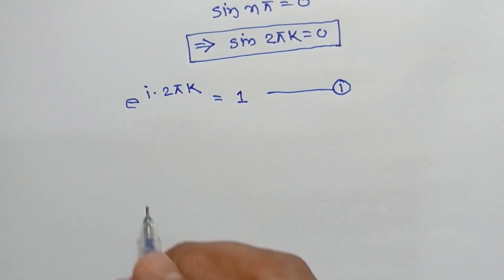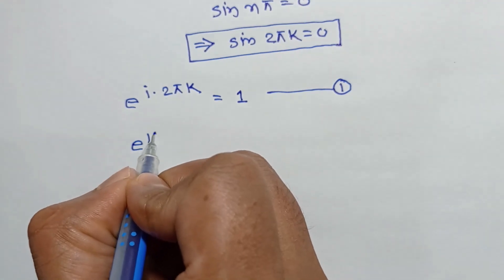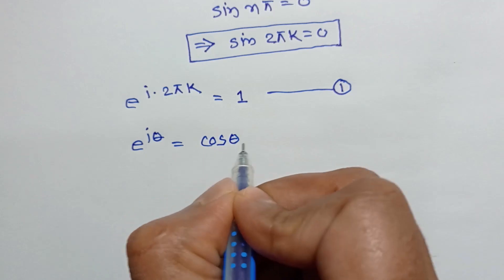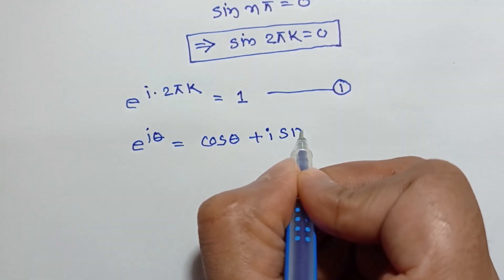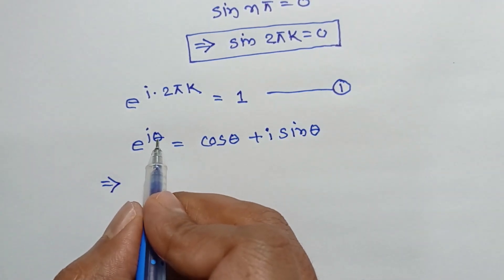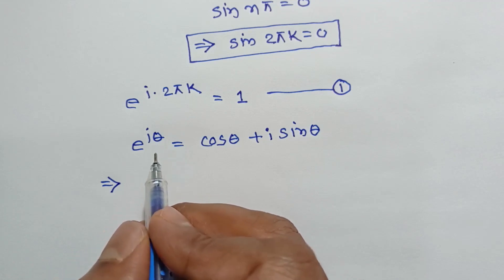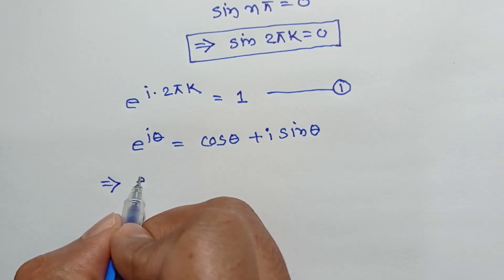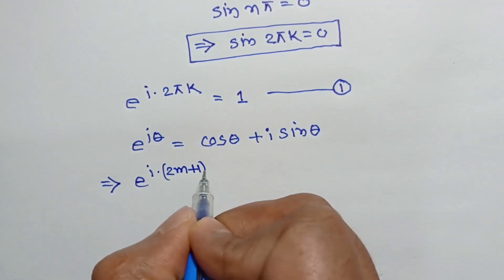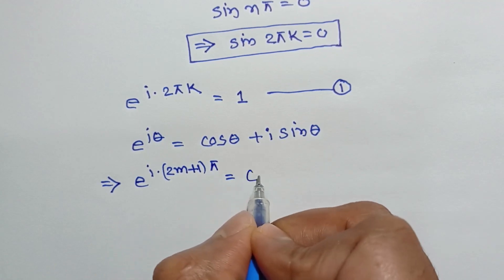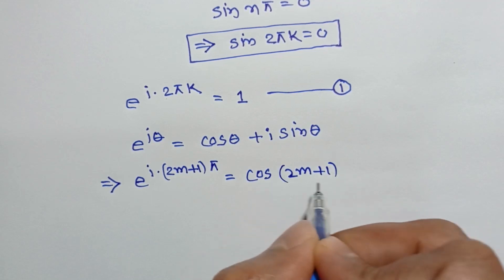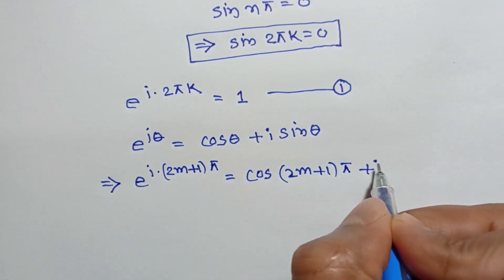Again, from Euler's equation e to the power i theta is equal to cos theta plus i sine theta. Substituting theta is equal to 2m plus 1 times pi, we will get e to the power i times (2m+1) pi is equal to cos of (2m+1) pi plus i sine of (2m+1) pi.